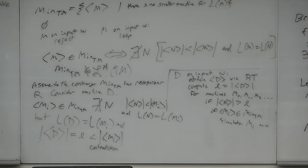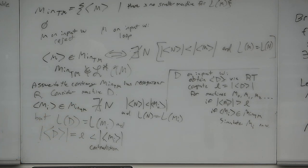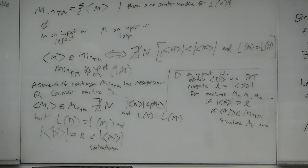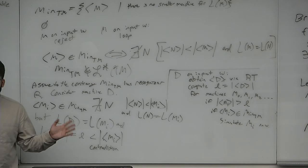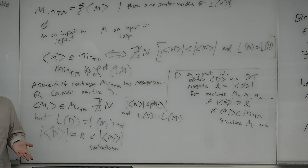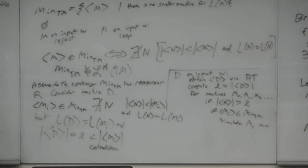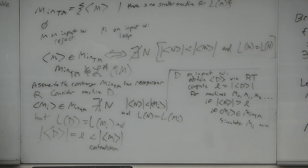A few applications of the recursion theorem — it's way more powerful than just printing a quine. You can use the recursion theorem to prove the halting problem undecidable, to prove Rice's theorem, to prove MinTM is not recognizable, and to prove a fixed-point theorem. A lot of the proofs we've done are diagonalization proofs — self-referential or negated self-referential. But this is unobjectable because we literally gave the construction of a machine that prints its own code. As long as that exists, so does the recursion theorem, and from there you get all of undecidability.